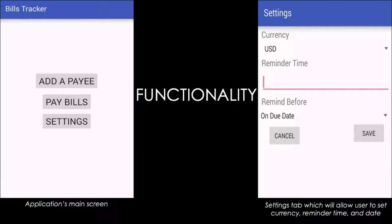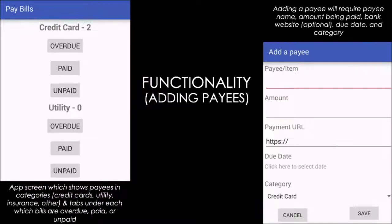In settings, we can change the currency type, either USD or Euros, set a reminder time for notification, and choose when to be notified — either on the due date, three days before, or a week before. The pay bills screen shows the four categories which payees can be under, and the subcategory of either overdue, paid, or unpaid bills.